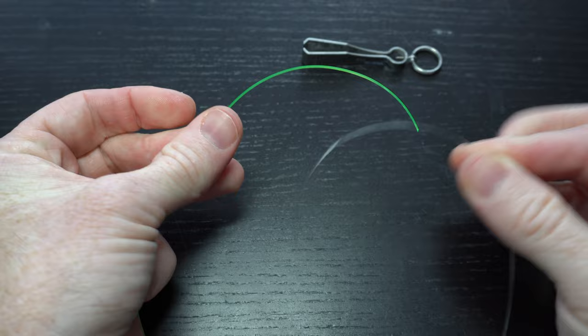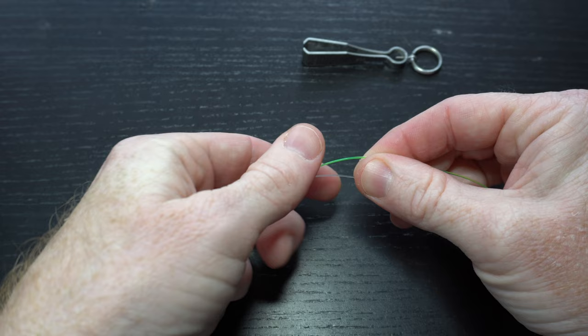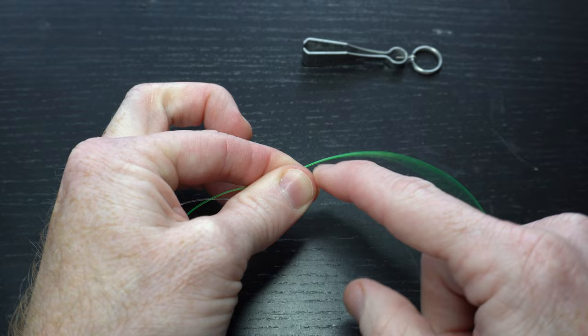I will represent the leader with this green line and the tippet with this clear. Start by putting them parallel to each other. With the two lines slightly separated, pinch the center, ensuring to leave enough room between the two lines and also leave enough tag end for both lines.